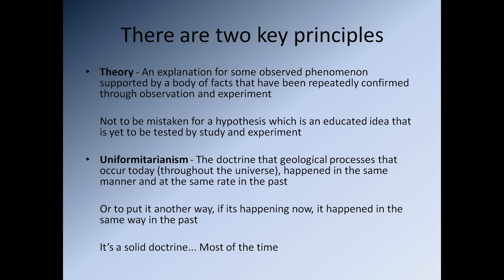The other term is uniformitarianism, which will turn up quite a bit during this course. Uniformitarianism is the doctrine that geological processes that occur today — throughout the universe — happened in the same manner and at the same rate in the past. The shortened version is: if it's happening now, it happened in the past. In the past, rivers deposited sediments into the ocean just like rivers do now. On the whole it's a relatively solid doctrine and it works about 80–90% of the time, though there are a few examples where it doesn't apply.